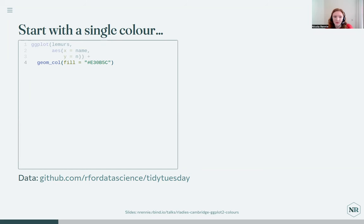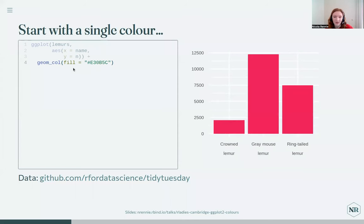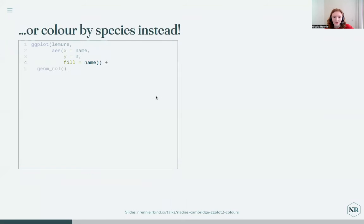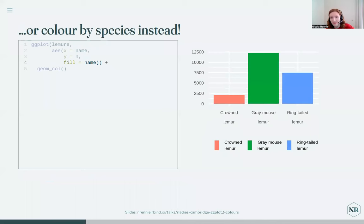If you're not super familiar with ggplot2, there are essentially two main ways to work with color. If we think about a bar chart, we could choose a single color for the bars independently of the data, specifying a fill color. Or we could map a column in our dataset to the color, getting a different color for each level in that column — in this case, species of lemur. I'm sure many of you will recognize this as the default ggplot2 color palette.